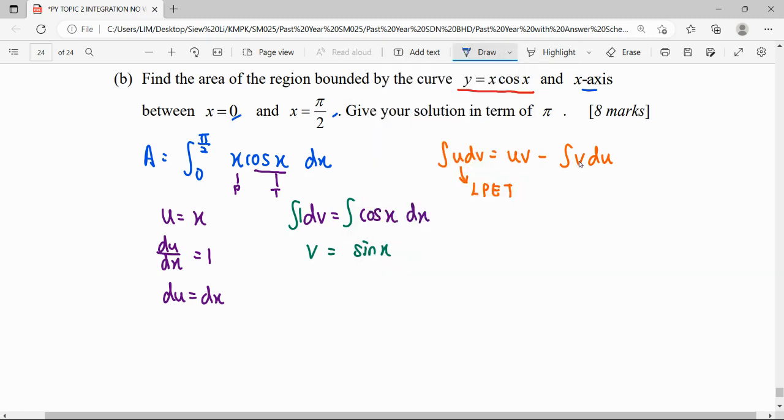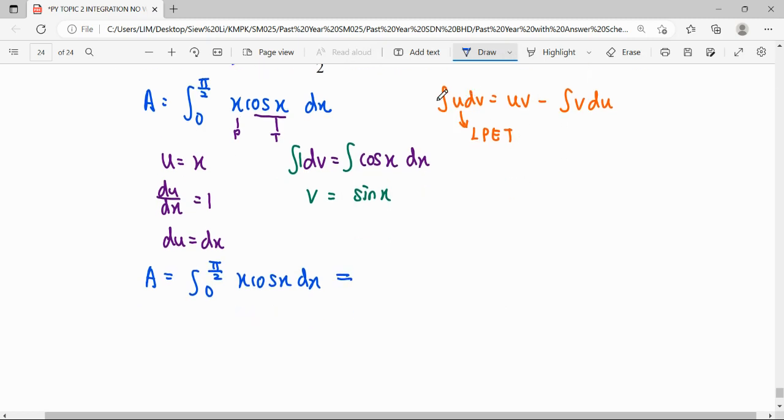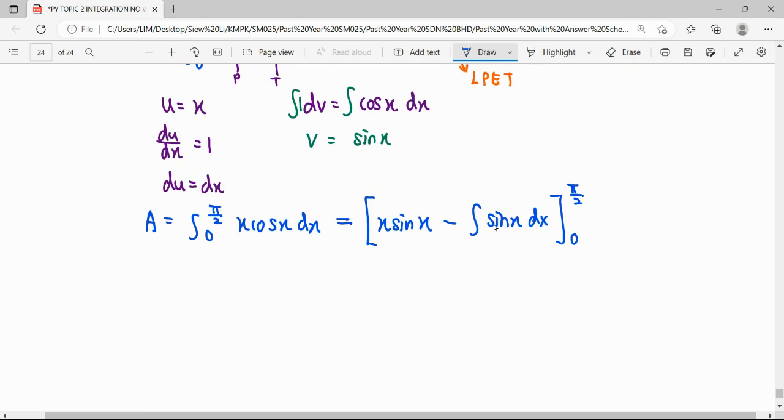We can continue with our question where A = ∫₀^(π/2) x cos x dx, which can be solved using the integration by parts formula: uv - ∫v du. So we get x sin x minus ∫sin x dx, all integrated from lower limit 0 to upper limit π/2. This is the part that we haven't simplified.